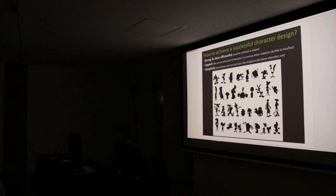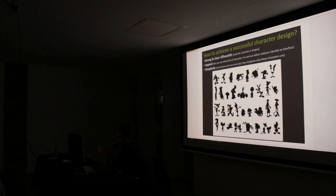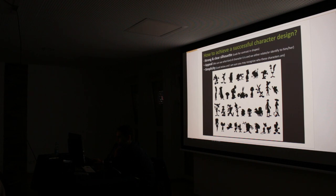If you look at what is successful in character design — even work produced in the 1920s and 1930s — a strong and clear silhouette is something that can be underrated at first. Whenever I start a sculpt, consciously or unconsciously, I look at the negative space, which is basically the silhouette. You're looking at angular shapes and contrasts. In posing, you use the C shape or S shape to make things more dynamic — that's used a lot in animation.